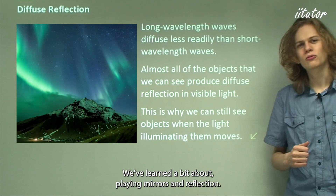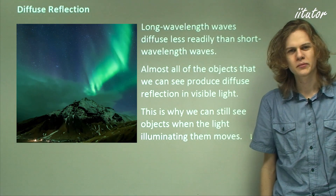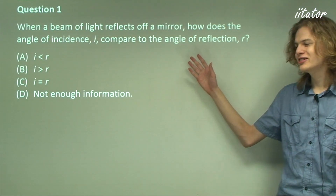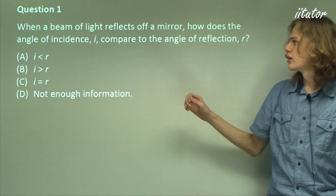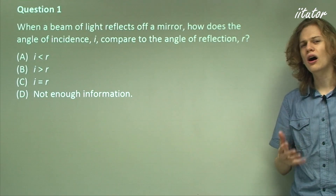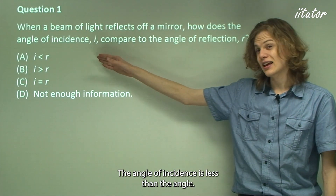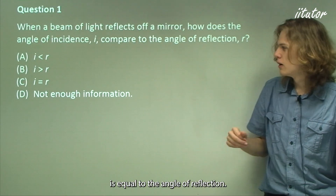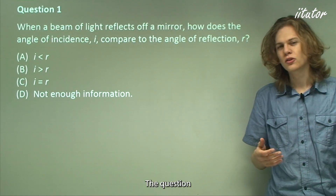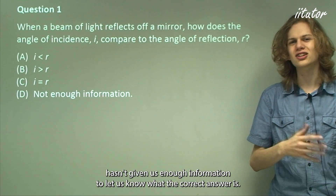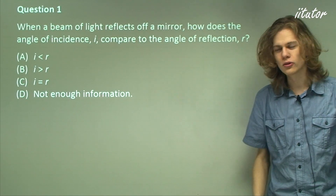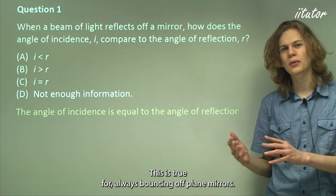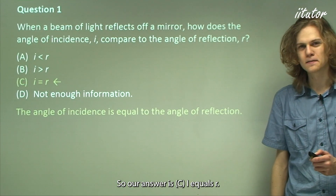That's the end of the theory. We've learned about plane mirrors and reflection, so let's go on to some questions. When a beam of light reflects off a mirror, how does the angle of incidence I compare to the angle of reflection R? The answer is that the angle of incidence is equal to the angle of reflection. This is true for all waves bouncing off plane mirrors, so our answer is C: I equals R.